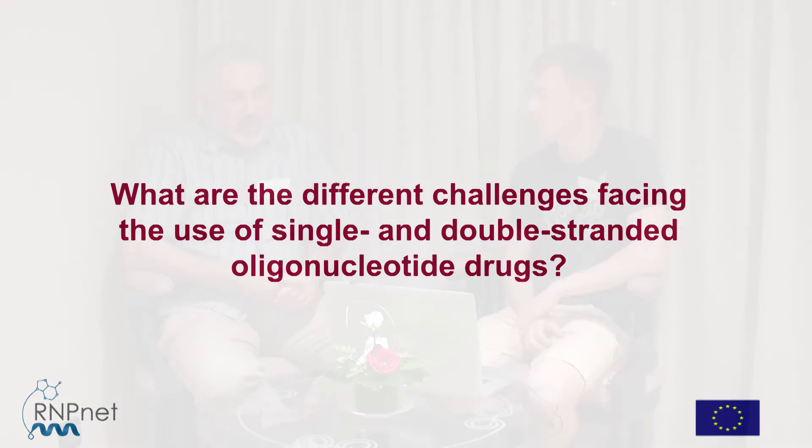For single-stranded oligonucleotides, there's been a lot of success already in delivering to a variety of cell types, so it's easier than people sometimes imagine. For double-stranded RNA, as in RNA interference, for various reasons it can be more difficult — it involves different uptake pathways, and so it's a different set of challenges.